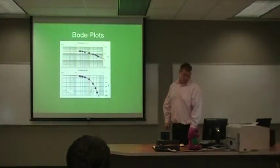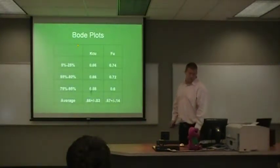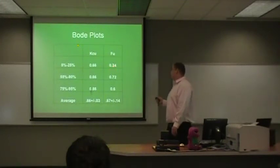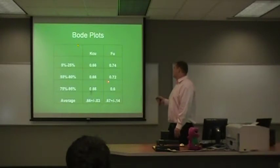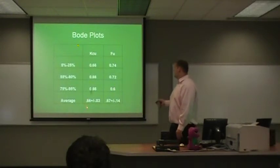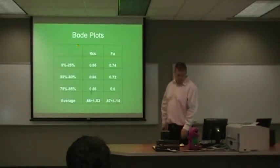Here's an example of our Bode plots and here is the information that was found. From the 5 to 25 percent input, it gave us a KCU of 0.6 and an ultimate frequency of 0.74. 55 to 80 percent gave us a KCU of 0.66 and ultimate frequency of 0.72. And from 75 to 95 percent input, it gave us a KCU of 0.66 and an ultimate frequency of 0.6. The average for the KCU is 0.66 plus or minus 0.03, and the ultimate frequency is 0.67 plus or minus 0.14.